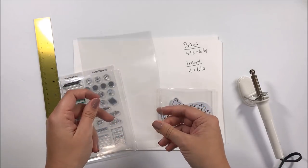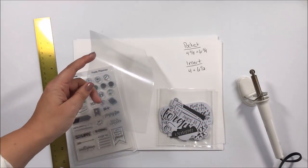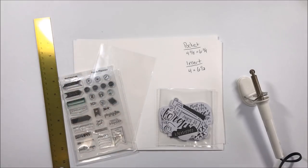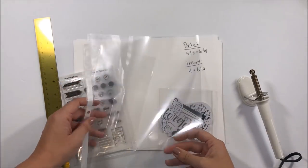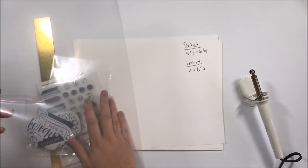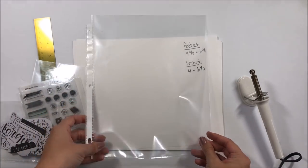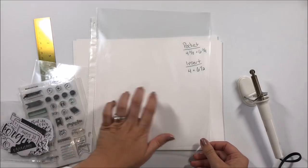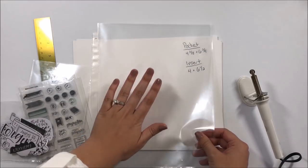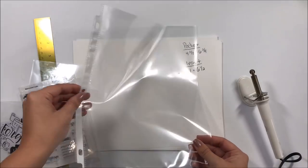So I start out with a clear protector sheet, one of these. And you can just find these in the office supply section. It's just a page protector. And so I can get actually two stamp pockets and two die cut pockets out of this one sheet, so I feel like that's pretty cost-effective for me.